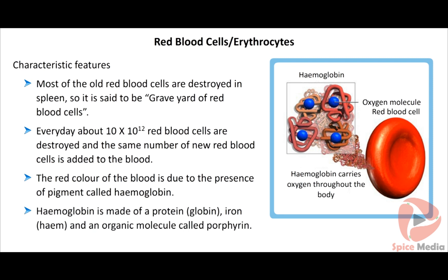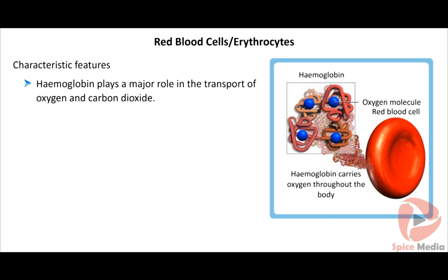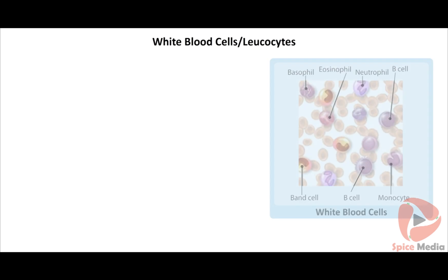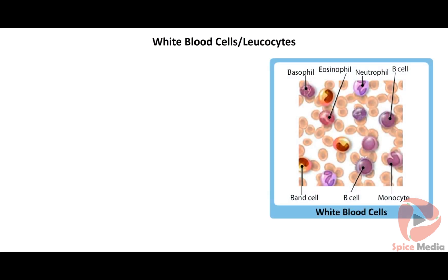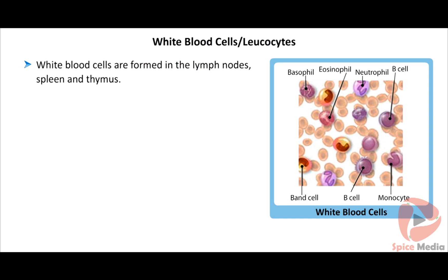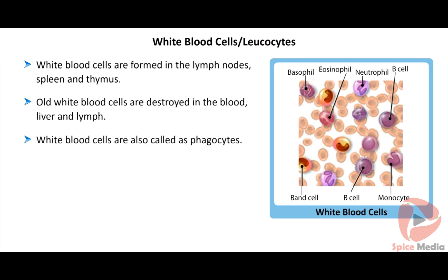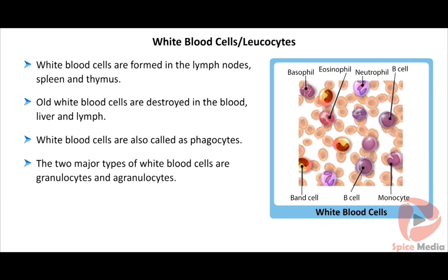Hemoglobin is made of a protein called globin, iron called heme, and an organic molecule called porphyrin. It plays a major role in the transport of oxygen and carbon dioxide. White blood cells, otherwise called leukocytes, are formed in the lymph nodes, spleen and thymus. White blood cells move like amoeba and feed on foreign materials that enter the body; therefore they are also called phagocytes. The two major types of white blood cells are granulocytes and agranulocytes.